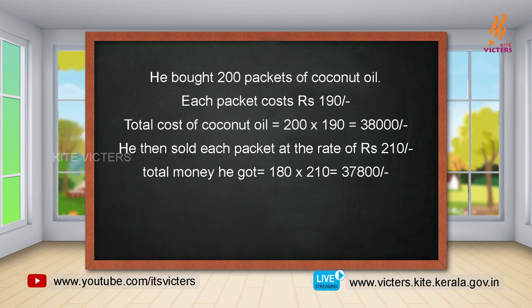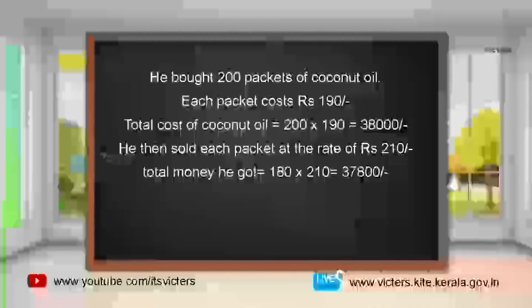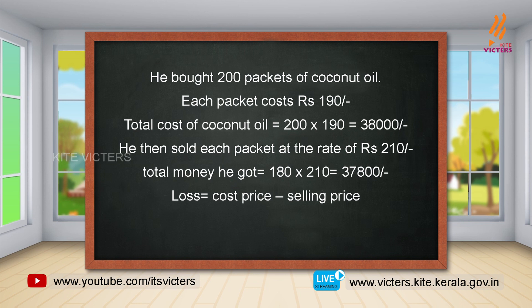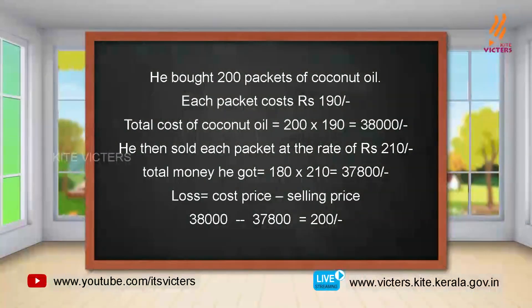Did he get a profit? No, he is at a loss. Loss equals cost price minus selling price: 38000 minus 37800, which equals rupees 200. So he has a loss of rupees 200.